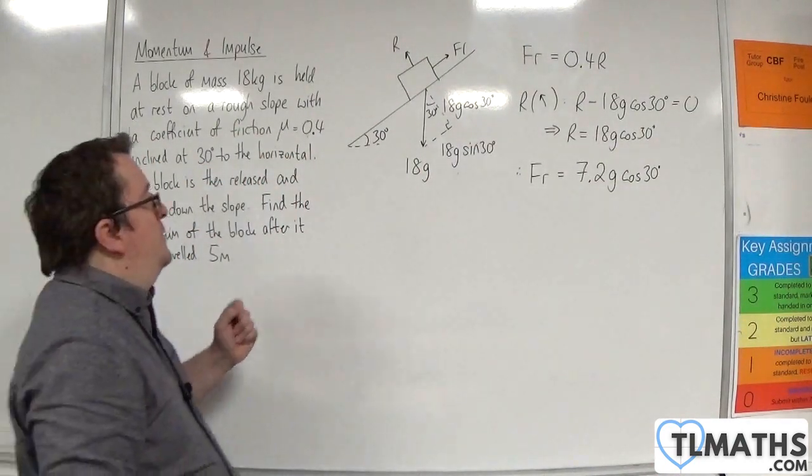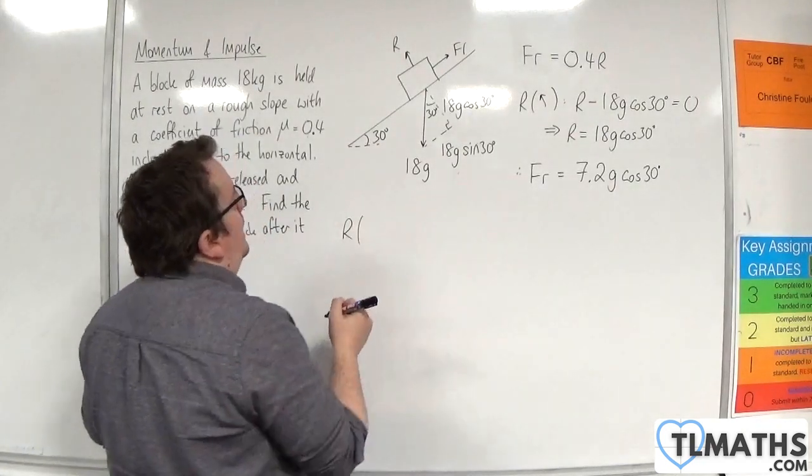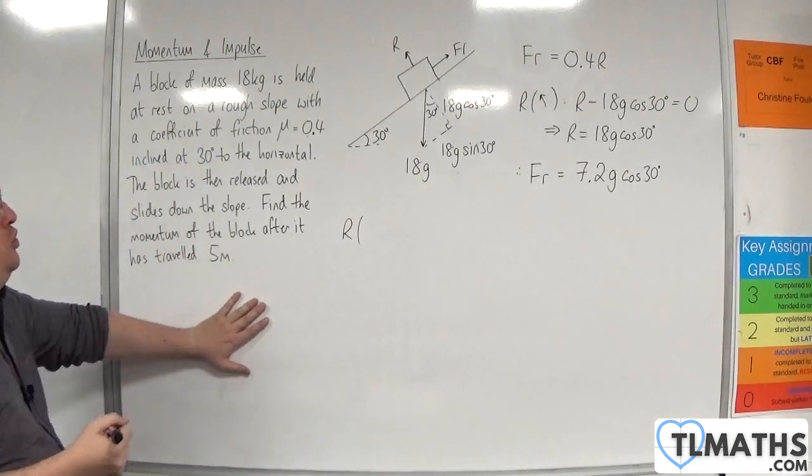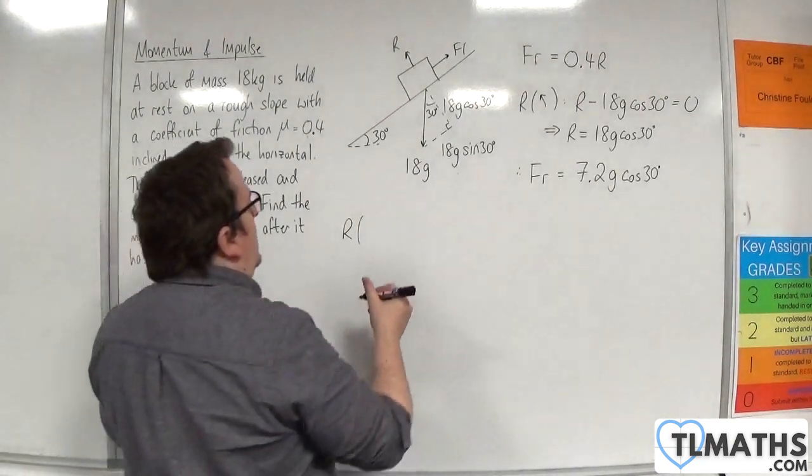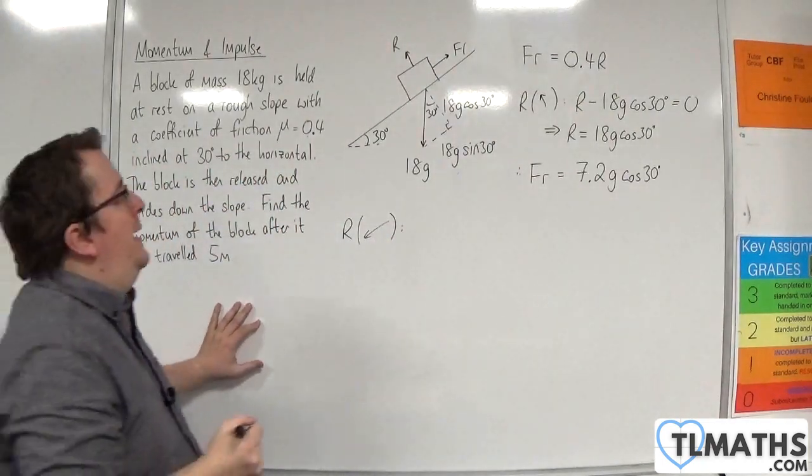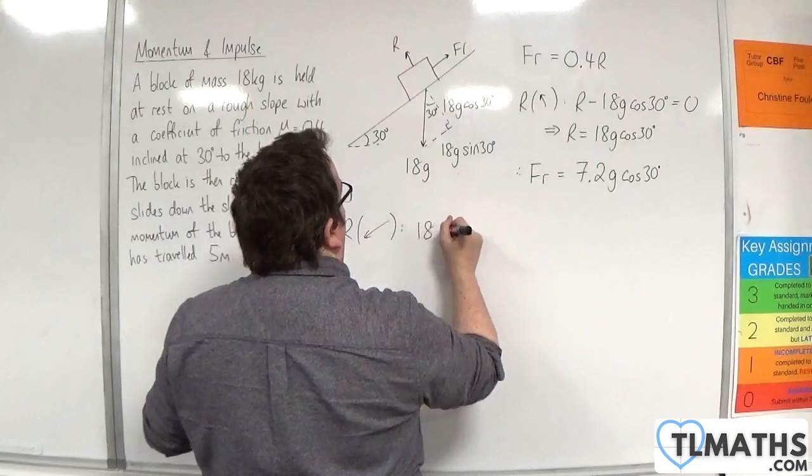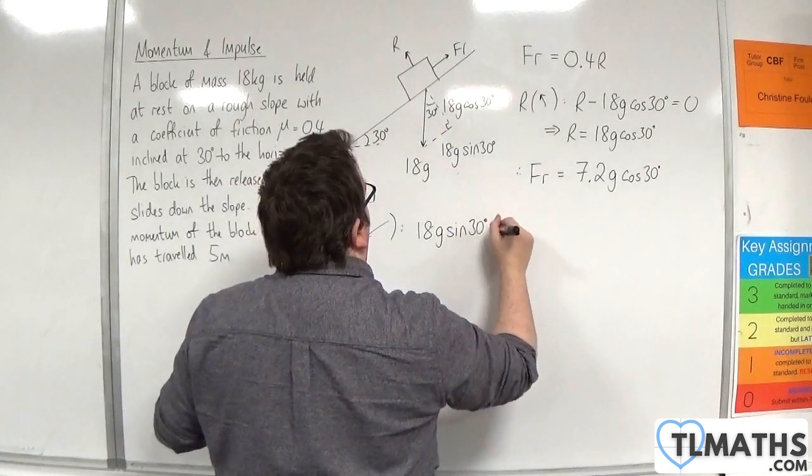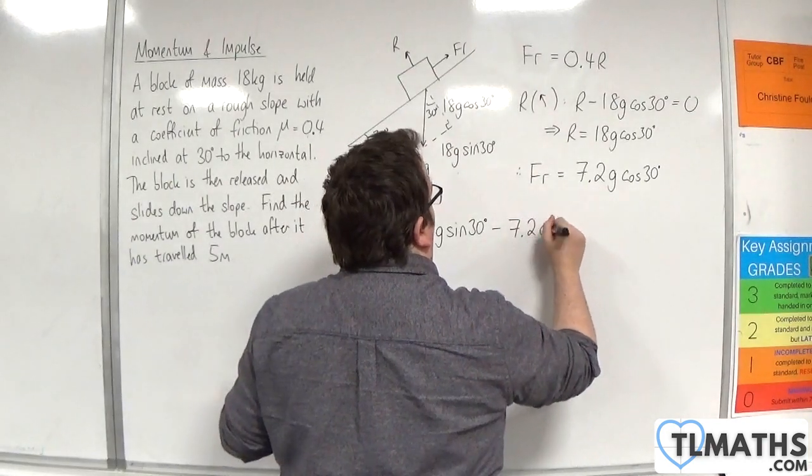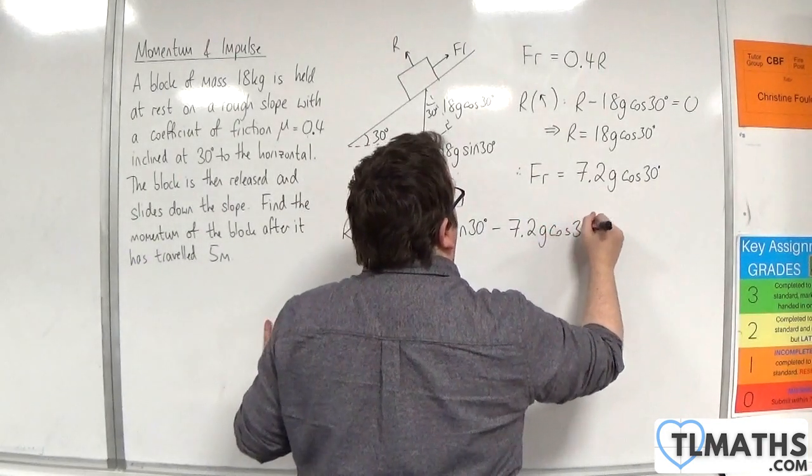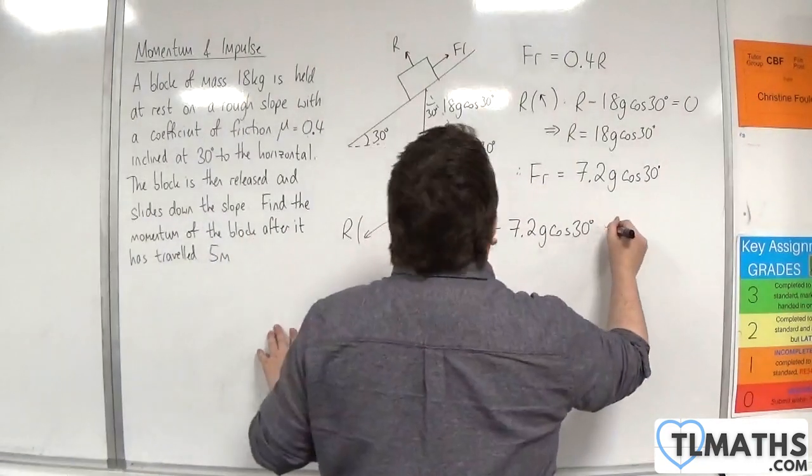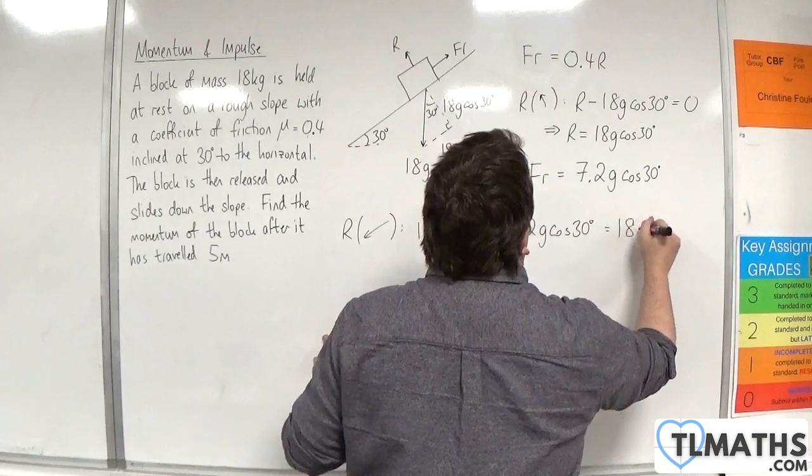So now if I resolve, which direction shall I go? Well, I'll go down the slope. Take down the slope as positive because that's the direction of motion. So we have 18g sin 30 take away the friction, which is 7.2g cos 30. And that's going to be equal to the mass, which is 18, times by the acceleration.